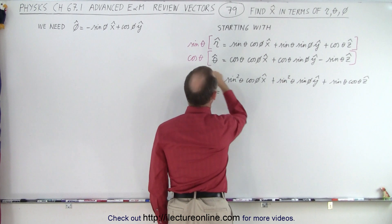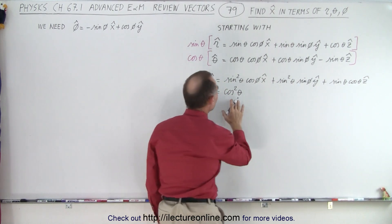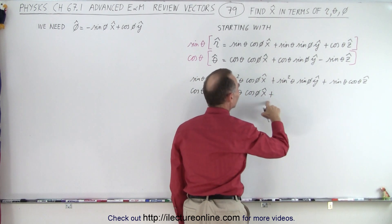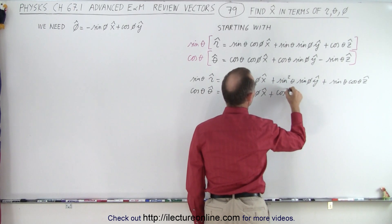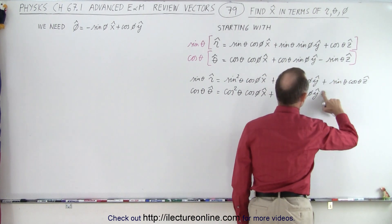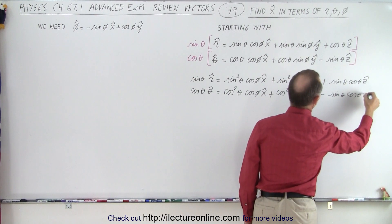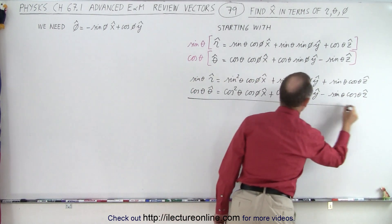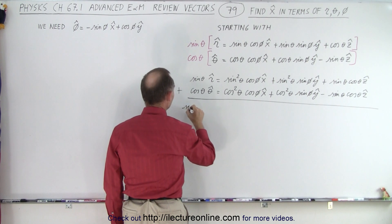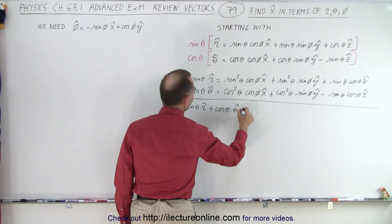For the second equation, we get the cosine of theta times the z unit vector equals the cosine squared of theta — notice we have sine squared and cosine squared, so maybe we'll get something here — times the cosine of phi times the x unit vector, plus the cosine squared of theta times the sine of phi y unit vector, minus the sine of theta times the cosine of theta times the z unit vector. Now we're going to add these two equations together.